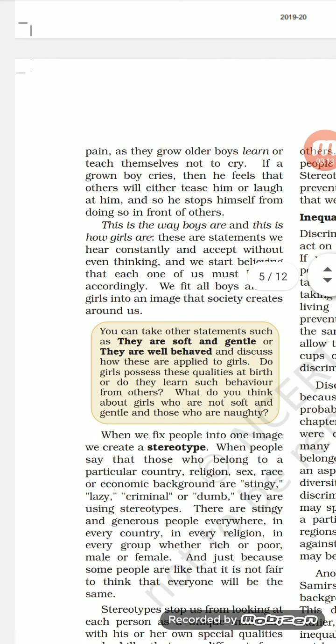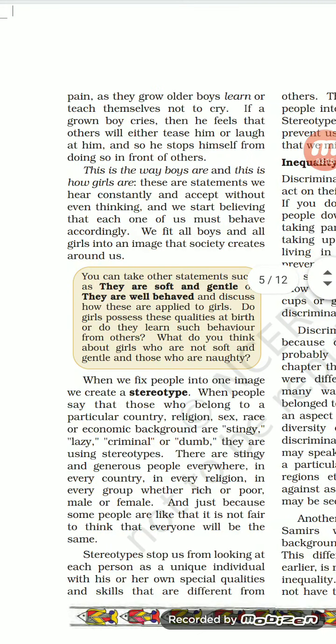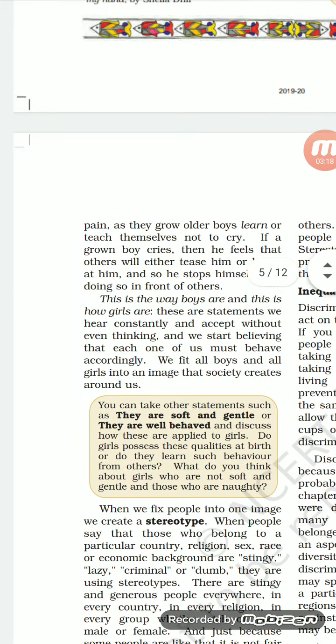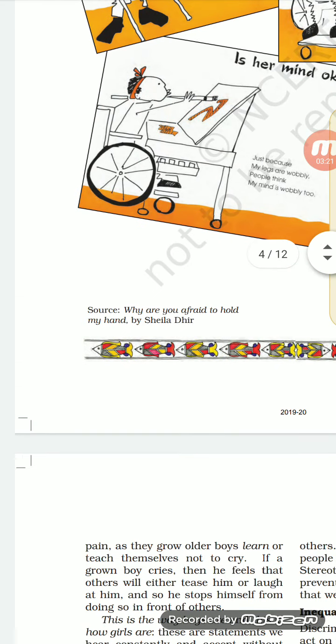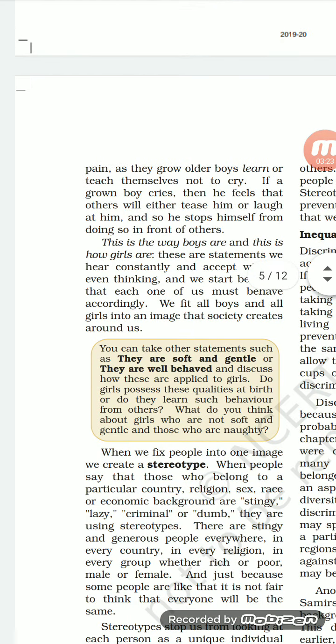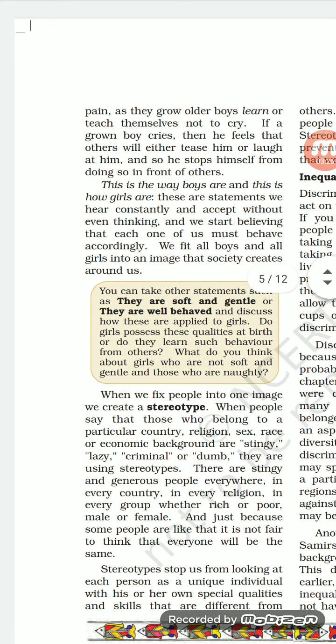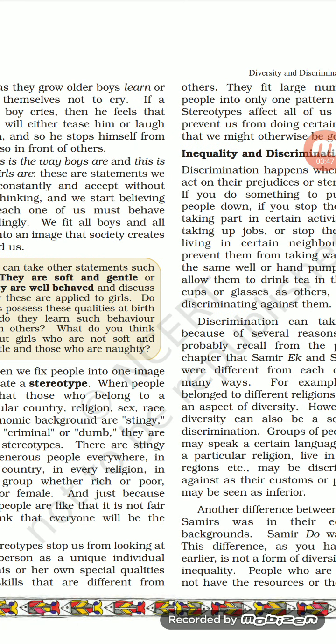Stereotype is defined on page number 14 as a fixed mindset about a community or group of people. For example, we often talk about religion and economic background — that lower caste people are always going to be criminals, always going to do non-essential work, and do not match us. This kind of fixed mindset that people create is called stereotype.